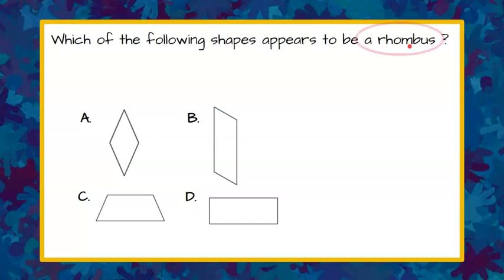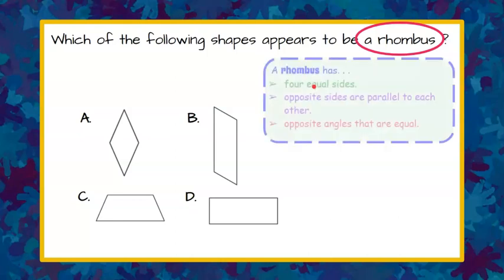Welcome back. We are asked to identify a rhombus, so let's review what properties a rhombus possesses. A rhombus has four equal sides. So let's start right there.